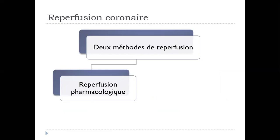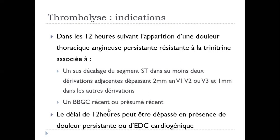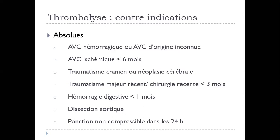Deux méthodes de reperfusion. La thrombolyse ou la fibrinolyse, c'est la lyse du caillot de fibrine, la transformation du plasminogène en plasmine, dissolution du caillot sanguin. On injecte par voie intraveineuse plusieurs molécules : streptokinase, alteplase, reteplase. La plus utilisée actuellement, c'est la ténecteplase. Par contre, il y a un risque hémorragique important. C'est pour ça qu'il y a des contre-indications à la thrombolyse.